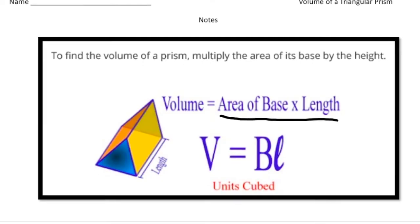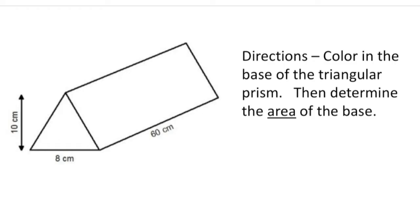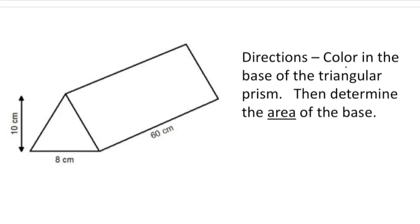Okay, so if you turn the page here we have a triangular prism. It says directions: color in the base of the triangular prism then determine the area of the base. Well, if you have a pen or pencil that's fine, or a crayon would be even better, but let's basically color in the base.